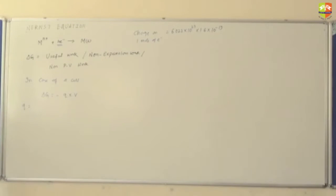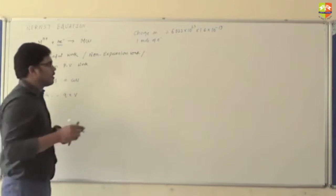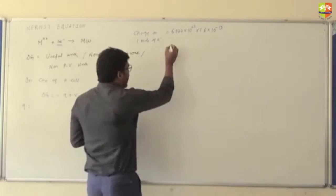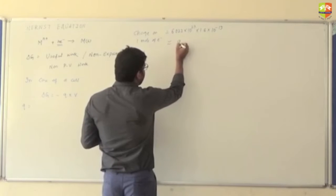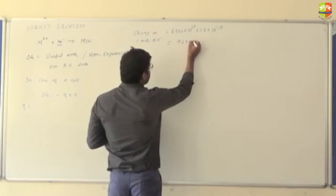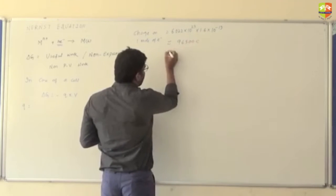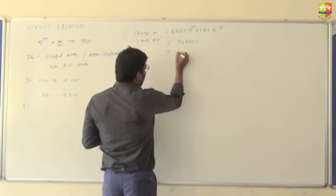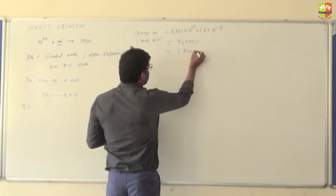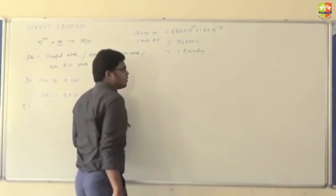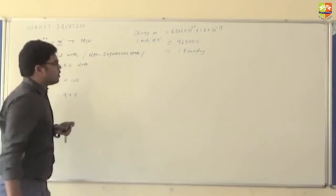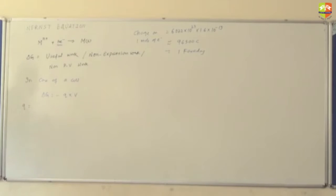Charge is important. When you do the electrolytic cell, we have used this also. Charge on 1 mole of electron is this. And when you solve this, it approximately equals 96500 Coulombs, which is nothing but 1 Faraday. So, charge on 1 mole of electron is 1 Faraday. Charge on N moles of electron is N Faradays.